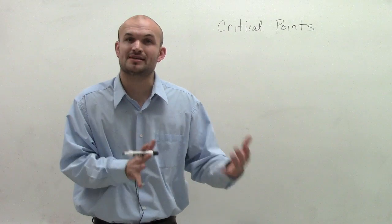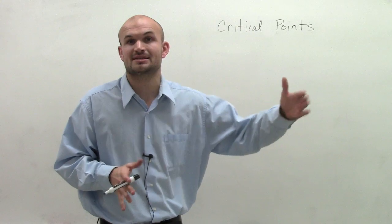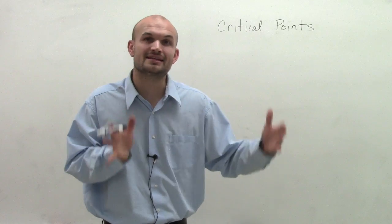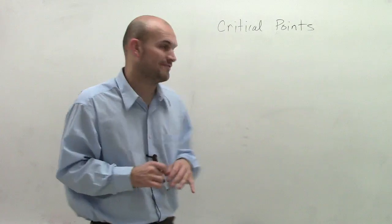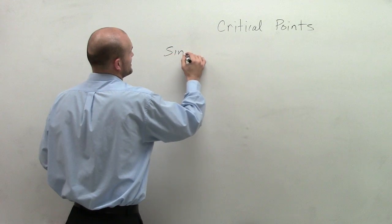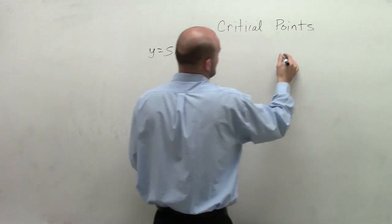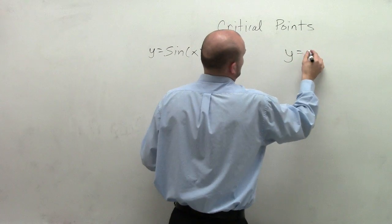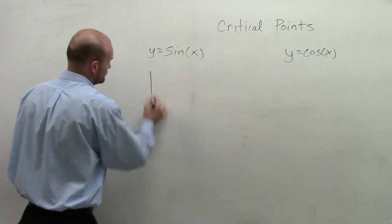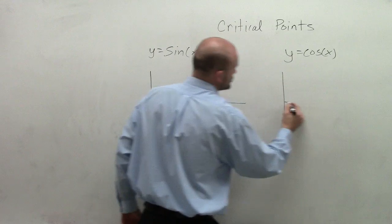Now remember, this is going to change when we have a transformation, and it's also going to keep on repeating itself over and over. But it's important for us to at least understand in the initial period where we have our critical points. So what I'm going to do is sketch the sine graph and the cosine graph so we can see these values. And again, I'm just going to sketch our initial period.